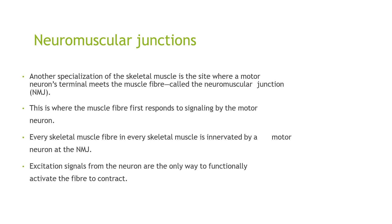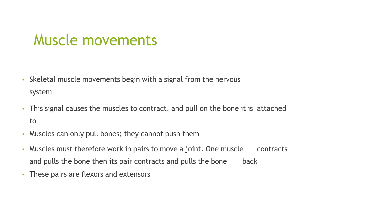Another specialisation of skeletal muscle is the neuromuscular junction (NMJ) — the site where a motor neuron's terminal meets the muscle fibre. This is where the muscle fibre first responds to signalling by the motor neuron; every skeletal muscle fibre is innervated by a motor neuron at the NMJ, and excitation signals from the neuron are the only way to activate the fibre to contract. Skeletal muscle movement begins with a signal from the nervous system, causing the muscle to contract and pull on the bone it is attached to. Muscles can only pull bones — they cannot push them — so muscles must work in pairs: one muscle contracts and pulls the bone, and its pair contracts and pulls the bone back. These pairs are known as flexors and extensors.